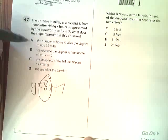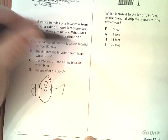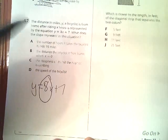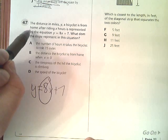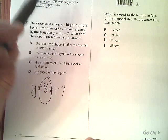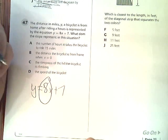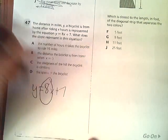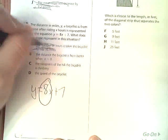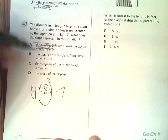So for 47, answer A says the number of hours it takes a bicyclist to ride 15 miles. Well, this defines x as the number of hours. So it's not going to be A. 47A makes no sense because it talks about the number of hours, but it says that x is the number of hours, so that's out.